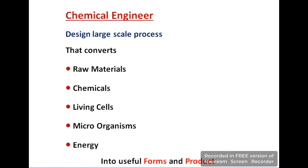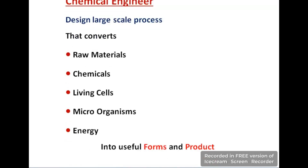A chemical engineer designs large-scale processes — meaning industrial processes. In these processes, they convert raw materials, chemicals, living cells, microorganisms, or energy into useful forms and products.